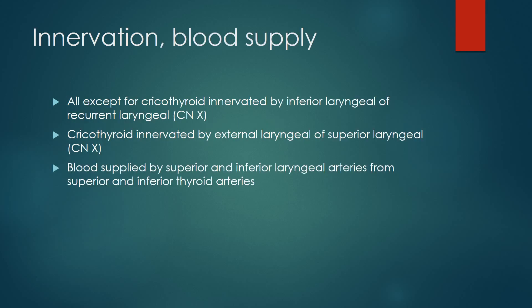All of the intrinsic laryngeal muscles except for the cricothyroid are innervated by the inferior branch of the recurrent laryngeal nerve, which comes from the vagus. The cricothyroid is innervated by the external laryngeal branch of the superior laryngeal nerve, also from the vagus. So all intrinsic muscles are innervated by the vagus, but by different branches. The blood supply is provided by the superior and inferior laryngeal arteries.